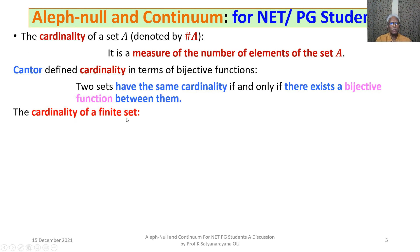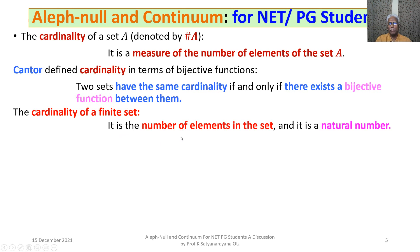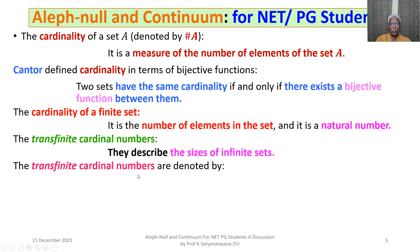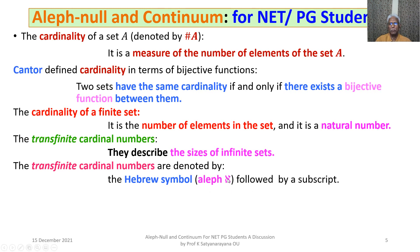The cardinality of a finite set is well known — it is the number of elements in that set, and it is a natural number. We also have the concept of transfinite cardinal numbers, which describe the sizes of infinite sets. The transfinite cardinal numbers are denoted by the Hebrew letter ℵ followed by a subscript: ℵ₀, ℵ₁, ℵ₂, ℵ₃, and so on — they are all infinite cardinal numbers.